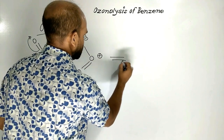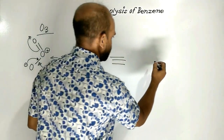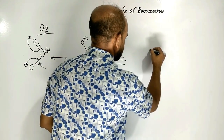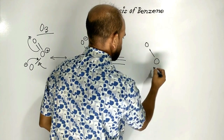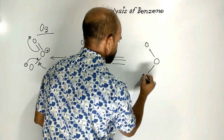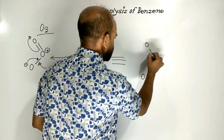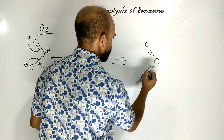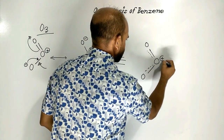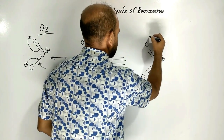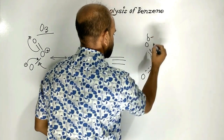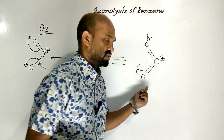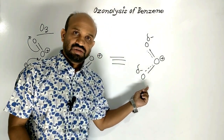Now the resonance hybrid may be like this: three oxygens connected with partially double bonds on each side, with a positive charge on the central oxygen and partially negative charges on each terminal oxygen. This is the resonance hybrid of ozone.